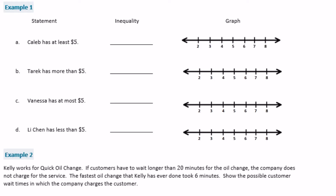Part A: Caleb has at least five dollars, meaning he has five dollars or more. So Caleb is greater than or equal to five dollars. On the graph, I put a circle on five dollars and color it in. I color it in because it includes five — if I left it open, it would be just greater than five. Since we have the 'or equal to' sign, we color it in.